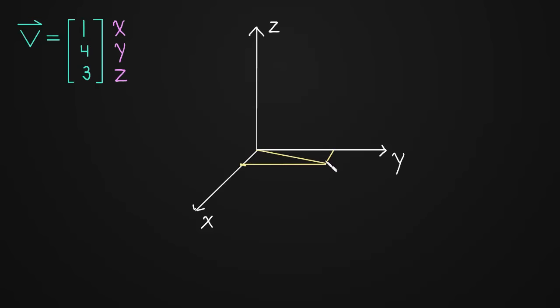So this is 1 in x, 4 in y, and then we just need to move up 3 in the z direction. And that will take us to our vector.